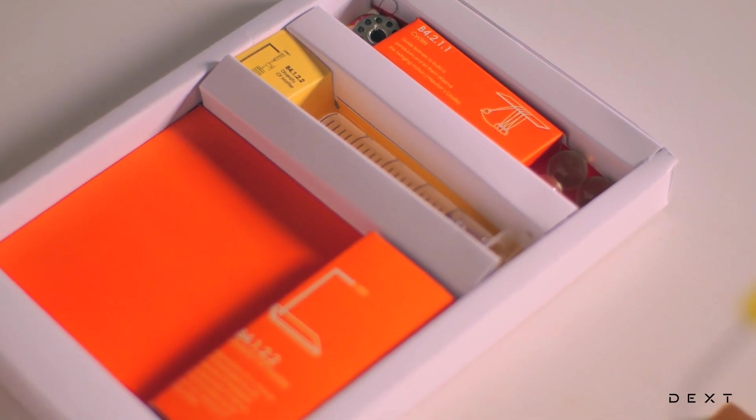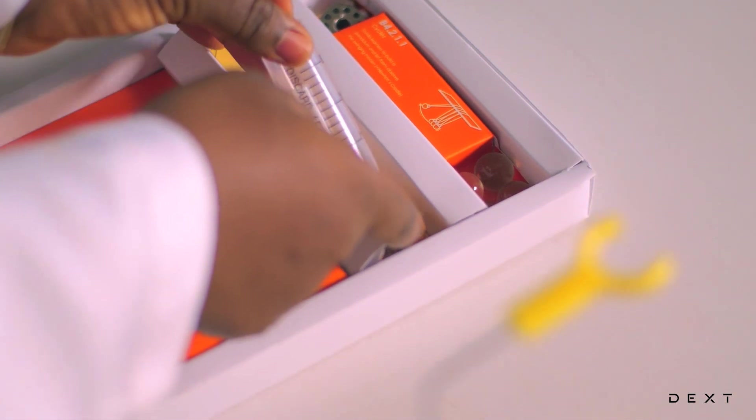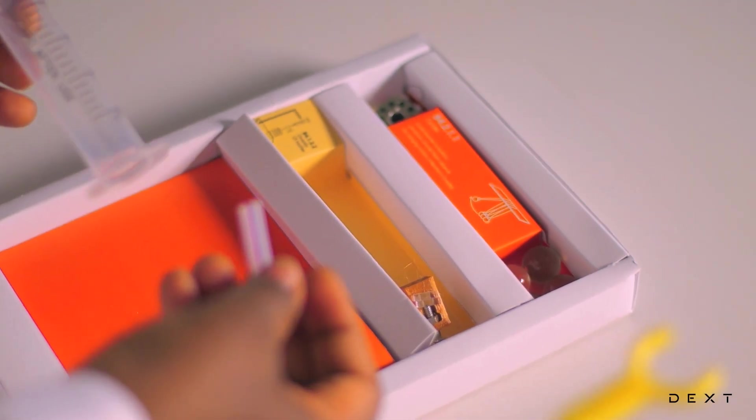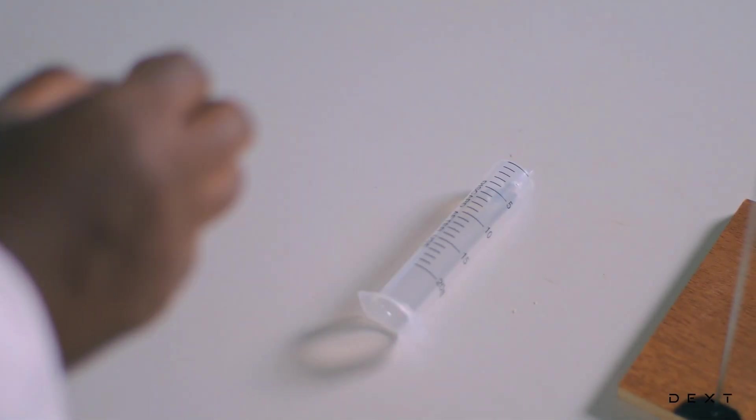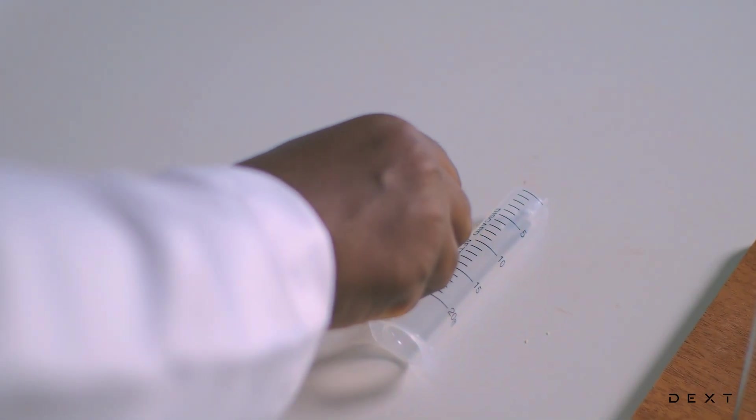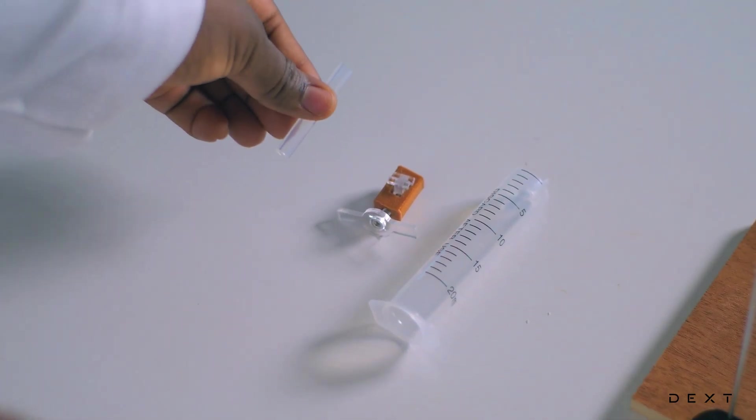Now let's move on to the separating funnel. So let's take our items to make the separating funnel. We have our barrel, we have our improvised tap, and we have the silicone tube.